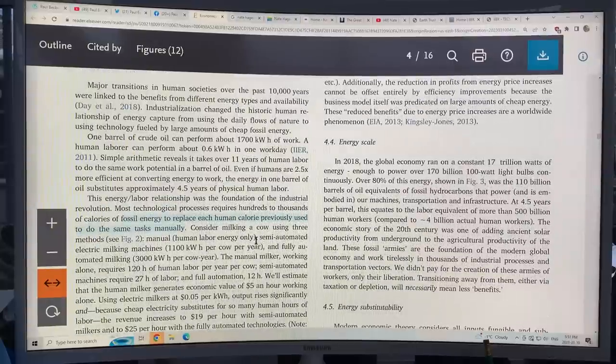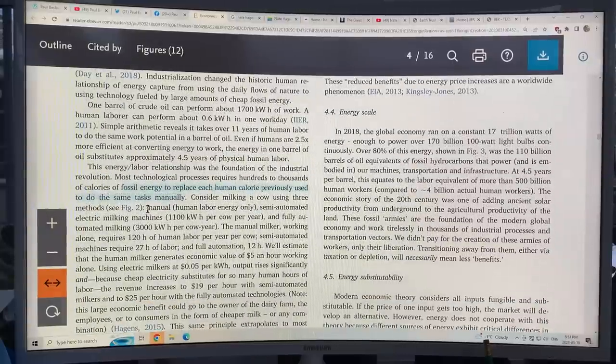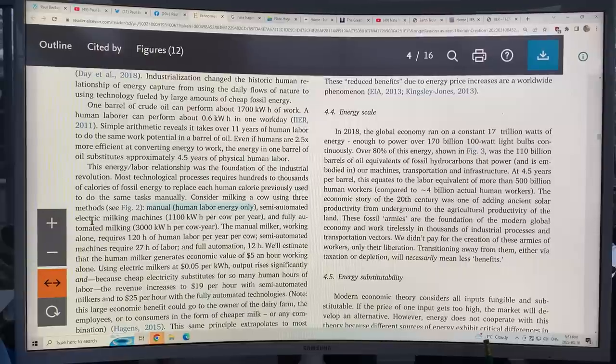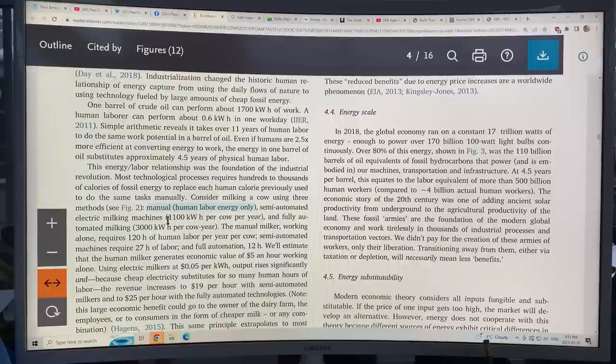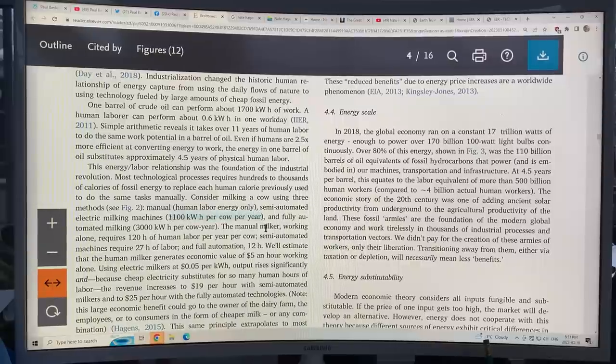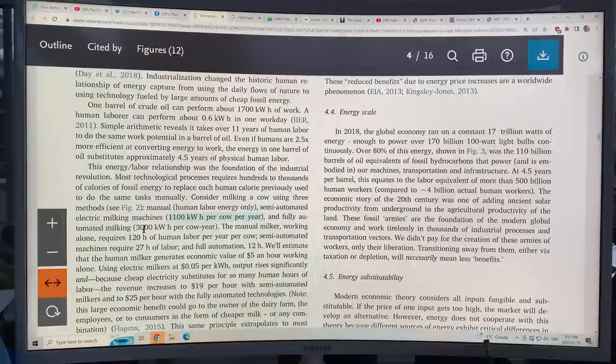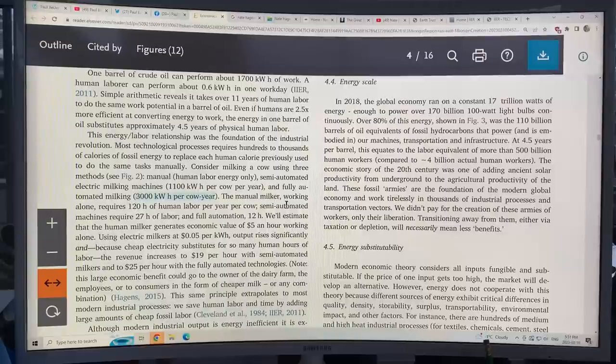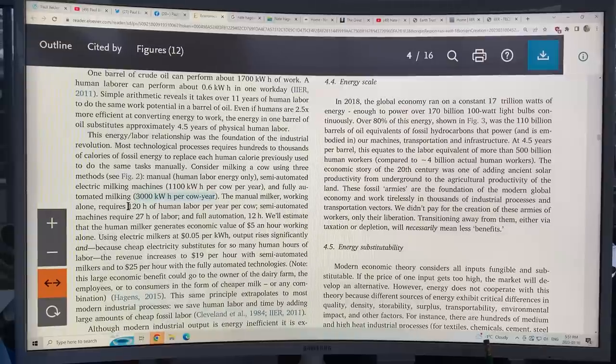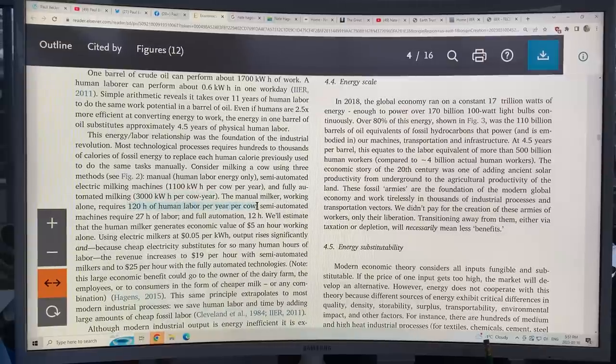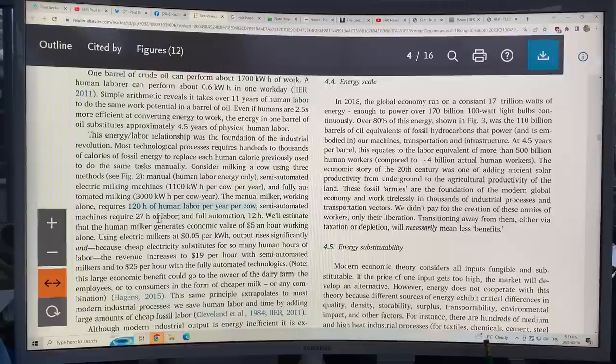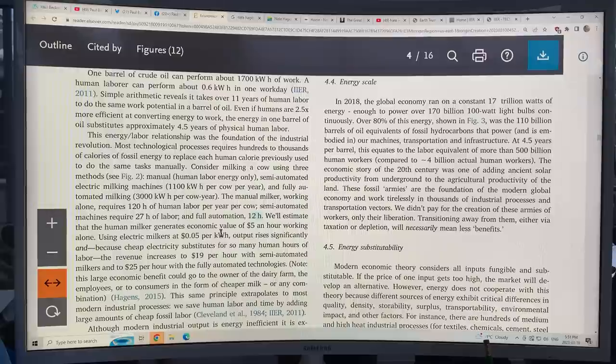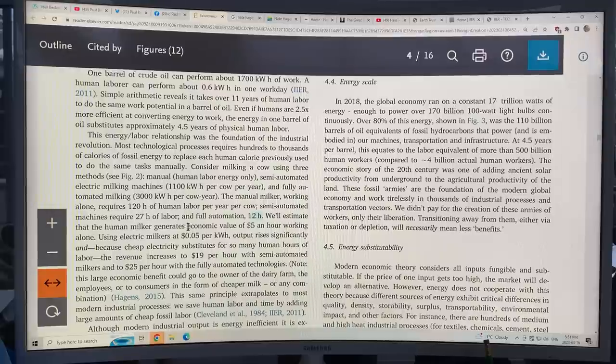Even if we became much more efficient, say by 2.5 times, it would still take four and a half years of human labor to match one barrel of oil in terms of energy content. So this is the foundation of the industrial revolution. Most technological processes require hundreds to thousands of calories of fossil energy to replace each human calorie previously used. So now the milking the cow example. There's three methods. One is manual, which is human labor only. Second is semi-electric milking machines, 1,100 kilowatt hour per cow per year. And the third is fully automated milking with 3,000 kilowatt hours per cow year.